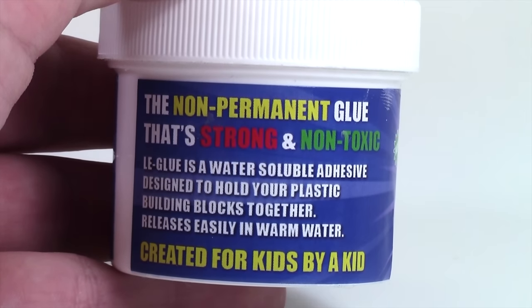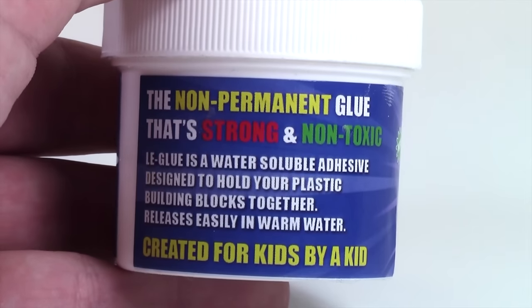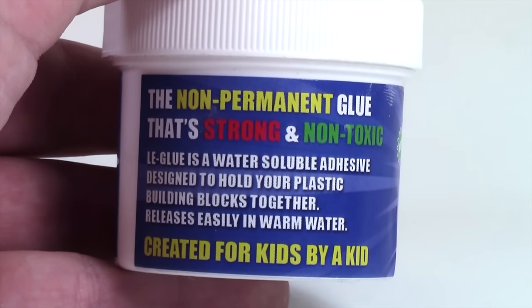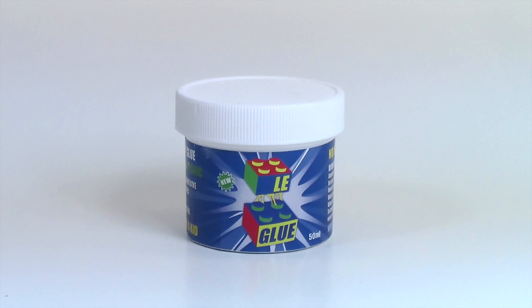It's a non-permanent glue that's strong and non-toxic and will come off when you rinse it in warm water and soap. I think this will help solve so many builders' problems. You can take the glue off and use those pieces for something else.